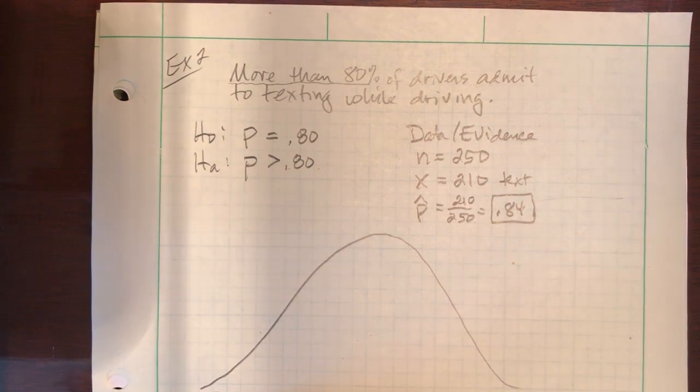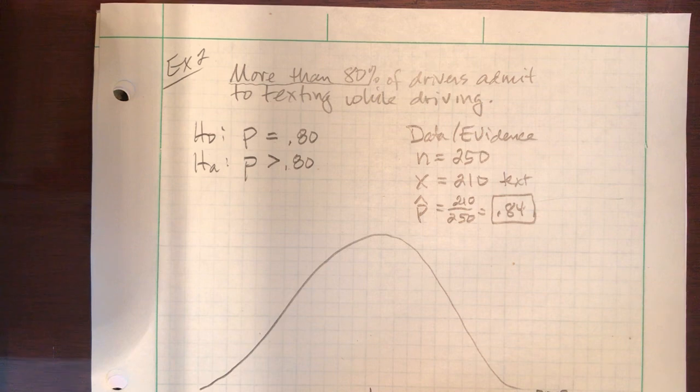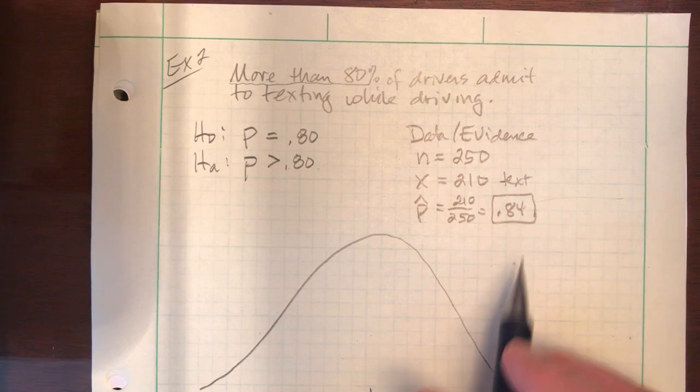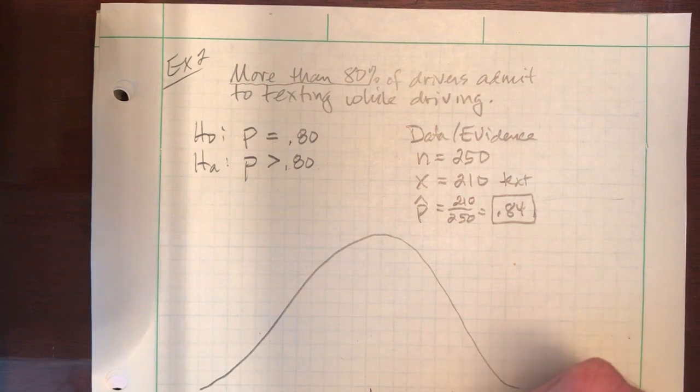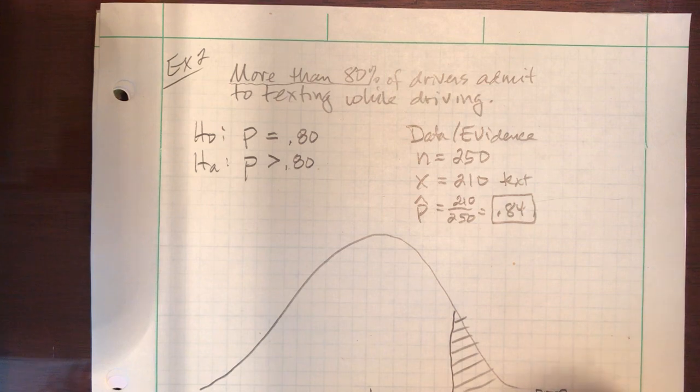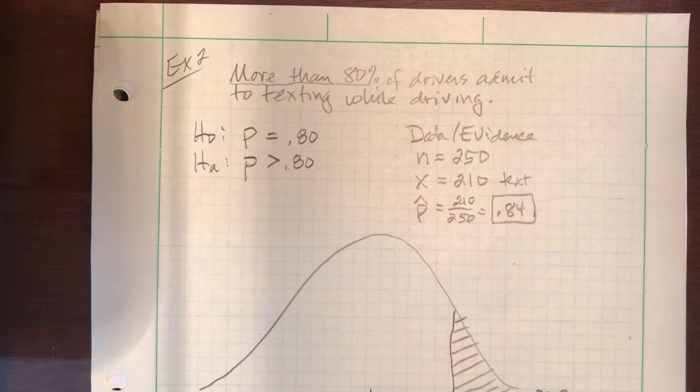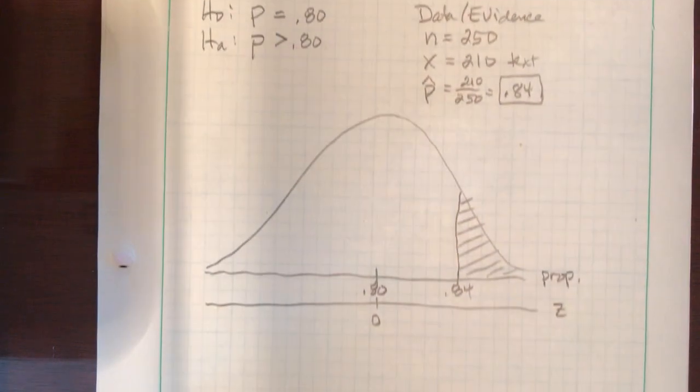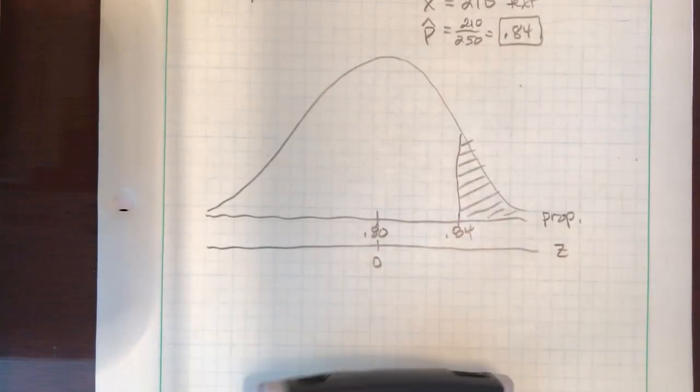To my curve I go. Two number lines. There's a proportion and a z-score. My null right down the middle. 84, again, to the right somewhere. Draw your line, shade the right tail. Zero is right down the middle. And here's where we head to our calculator to get my last two numbers. Let's watch this again.